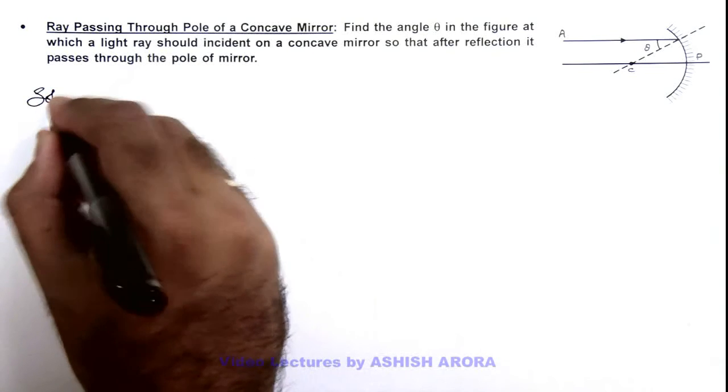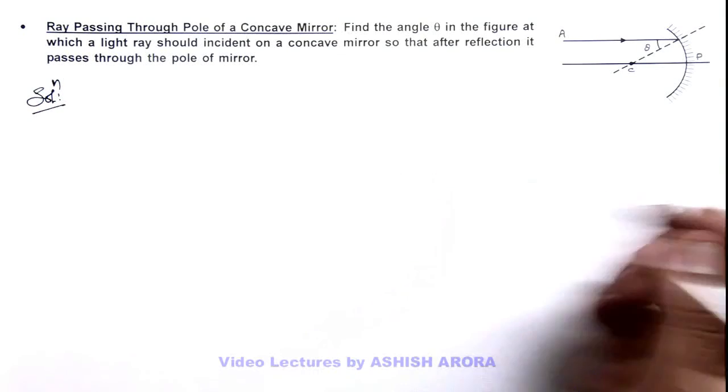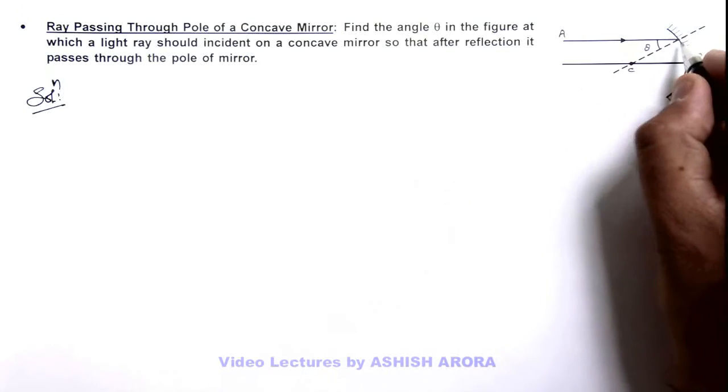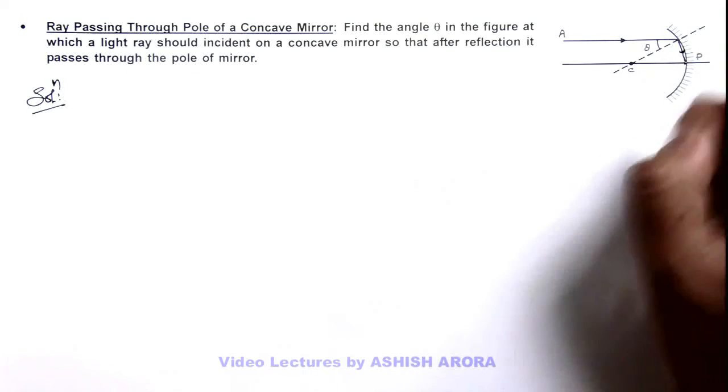Here the problem is mainly a geometrical case. When a light ray is incident here, after reflection we want the light ray to pass through the pole of this mirror.